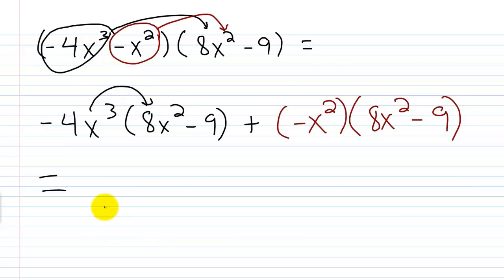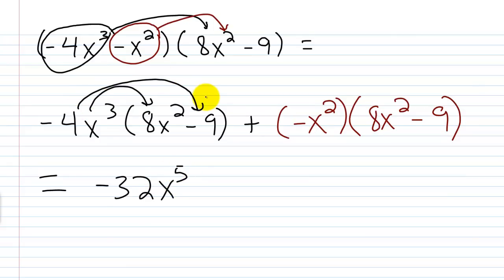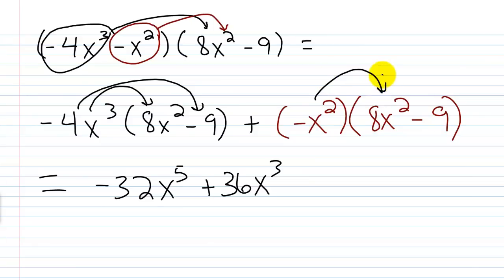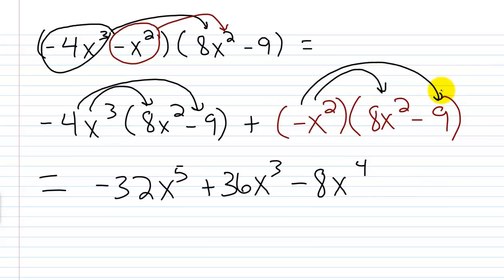Negative 4 times 8 is negative 32, and x cubed times x squared is x to the fifth power, giving negative 32x to the fifth. Then negative 4x cubed times negative 9 is plus 36x cubed. Next, negative x squared times 8x squared is minus 8x to the fourth power. Finally, negative x squared times negative 9 is positive 9x squared.